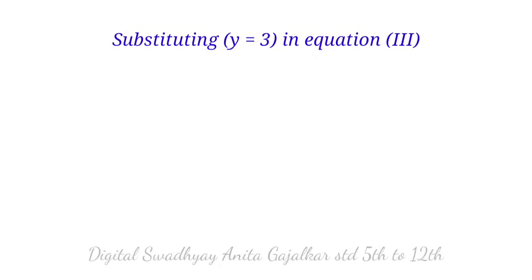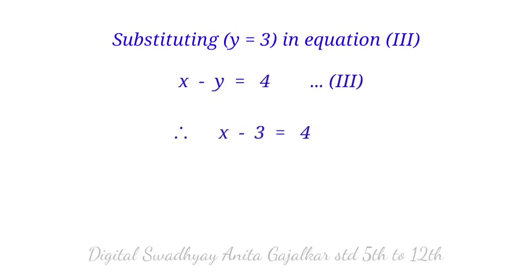Substituting y equal to 3 in equation 3 (x minus y equal to 4): x minus 3 equal to 4, so x equal to 4 plus 3, giving x equal to 7. The answer (x, y) equal to (7, 3) is the solution.